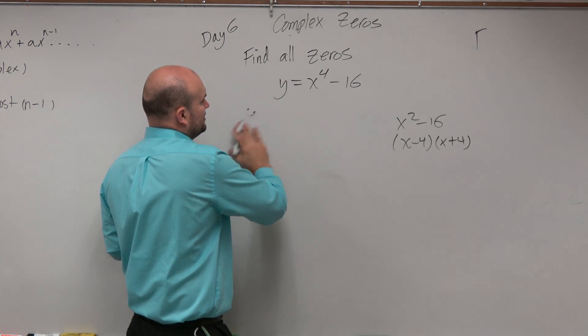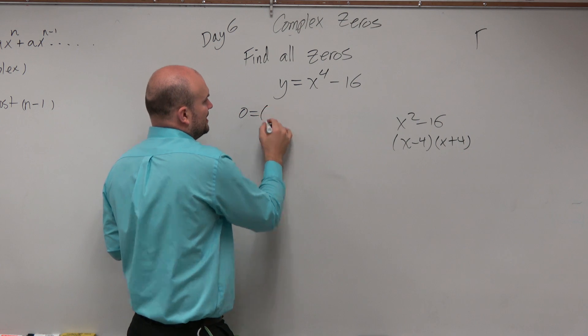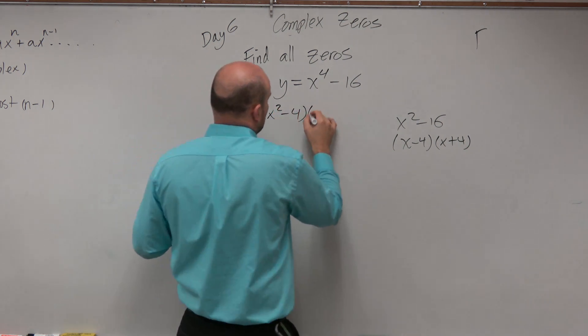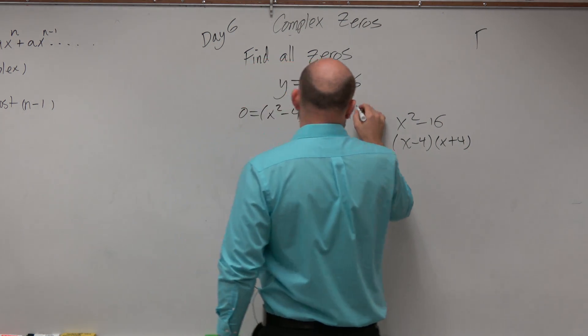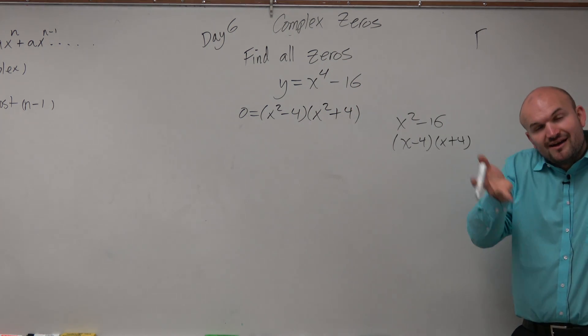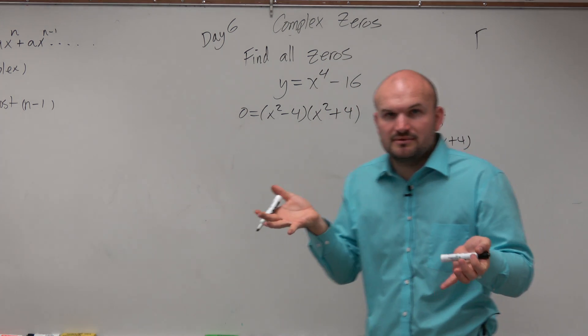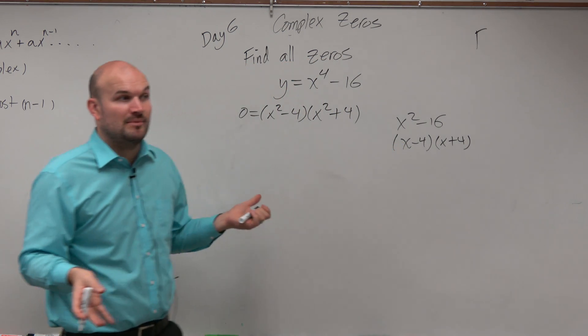So if we were going to write the zeros, I'm going to replace y with 0. And I could say that's going to be x squared minus 4 times x squared plus 4. Because I just now have to raise the power of my factors. That's basically the difference that I have to make now in my factoring techniques.